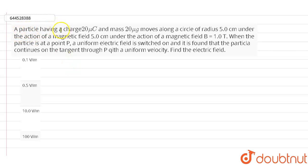So here in this question, it is given that a particle having a charge 20 microcoulombs and mass of 20 micrograms moves along a circle of radius 5.0 centimeters under the action of a magnetic field B equals 1.0 Tesla.